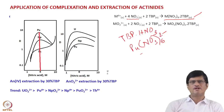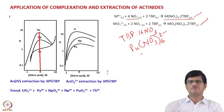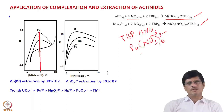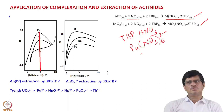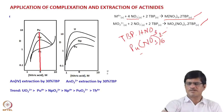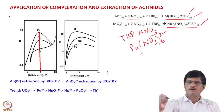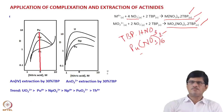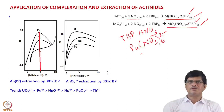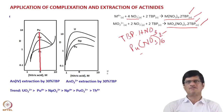Coming to the hexavalent actinide ions — uranyl, neptunyl, and plutonyl ions — the extraction equilibrium is given by the second equation. The actinide ion in the aqueous phase binds with two nitrate ions in the aqueous phase and two TBP molecules in the organic phase to give the extracted species. Comparing the two species for tetravalent and hexavalent ions, the number of TBP molecules is the same for both, meaning the organophilicity of the extracted complex is the same.